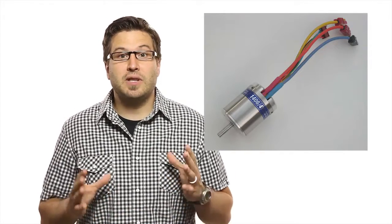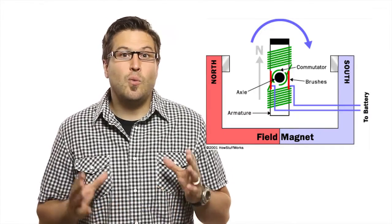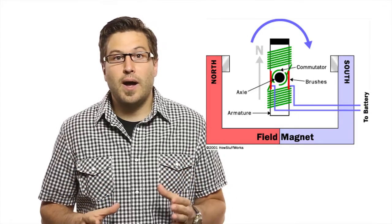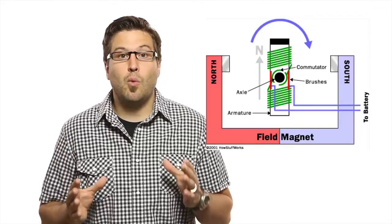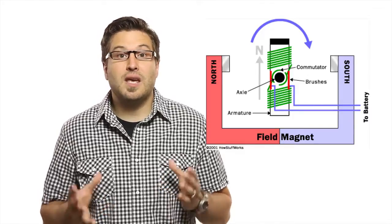The basic principle of electromagnetism states that when you run an electric current through a wire, a magnetic field is generated. So when you run electricity through a wire, the wire itself becomes an electromagnet.